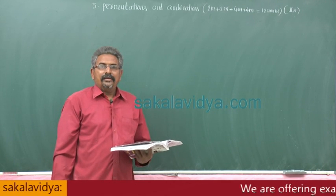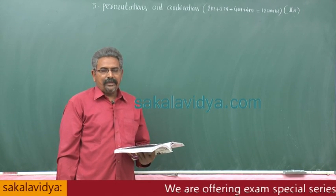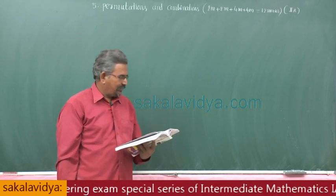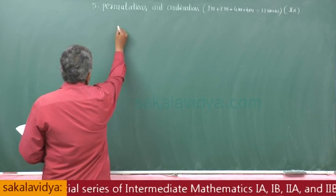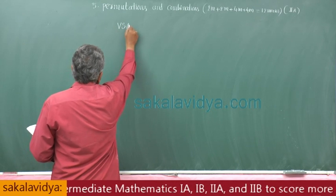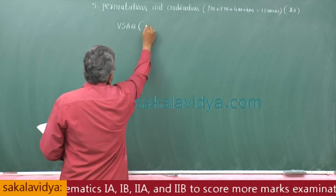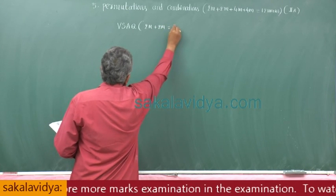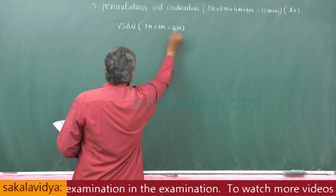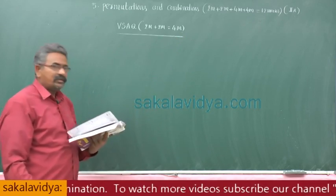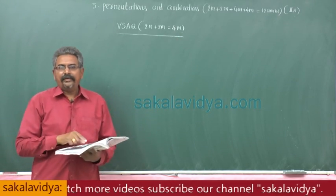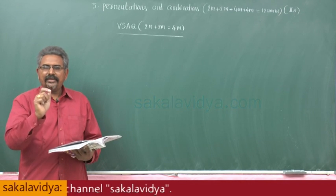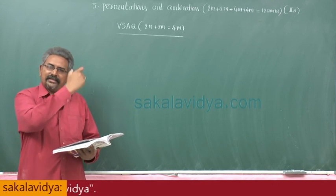Now let us discuss problems on permutations and combinations - first, very short answer type questions. VSAQ, that is 2 marks plus 2 marks, total 4 marks. That means 2 very short answer type questions will appear from this chapter. This is very easy if you follow these questions.